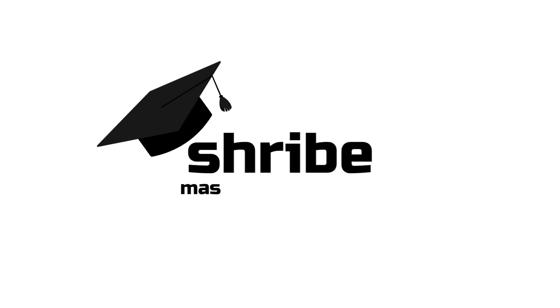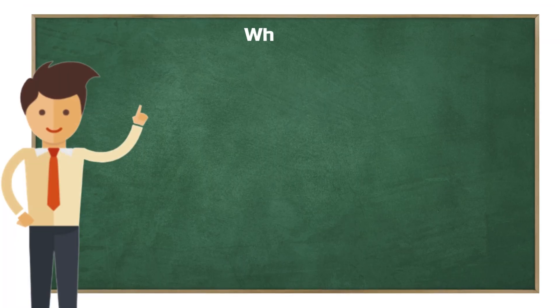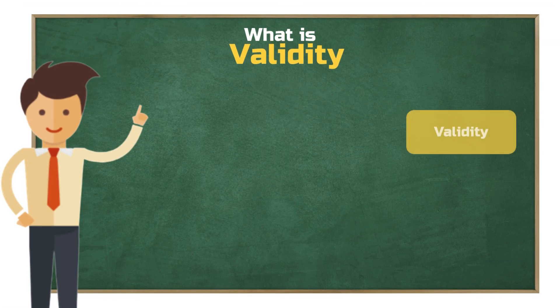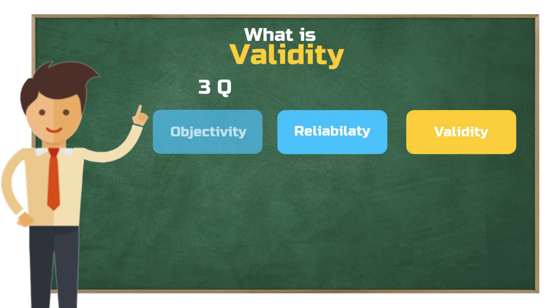And now, without further ado, welcome to Schreib. What was validity again? Exactly — it's one of the three quality criteria used to assess the rigor of scientific studies.